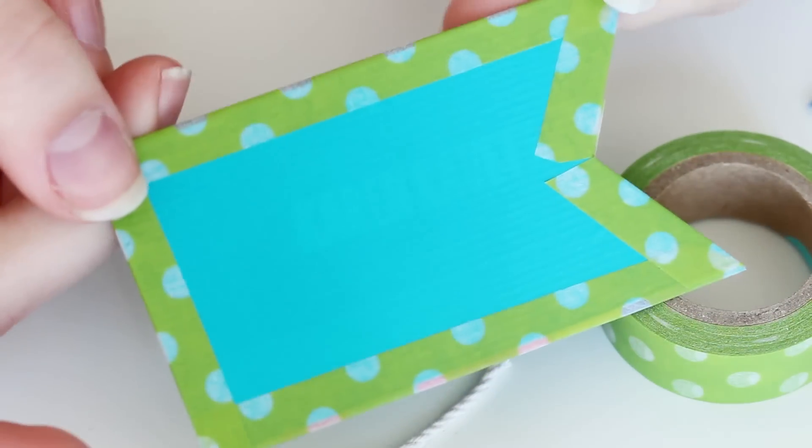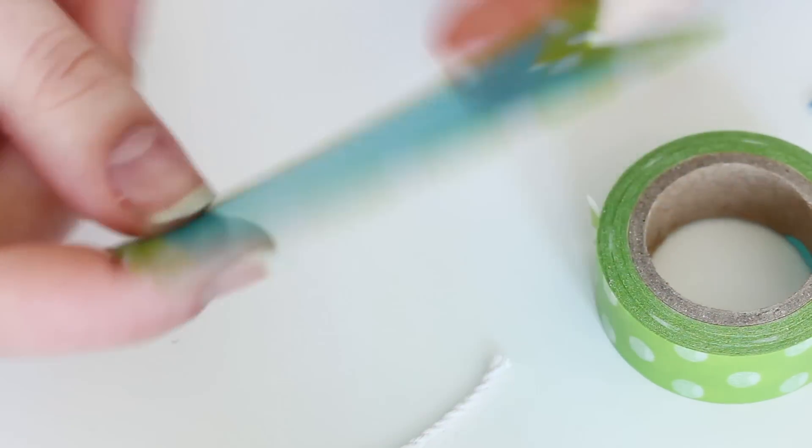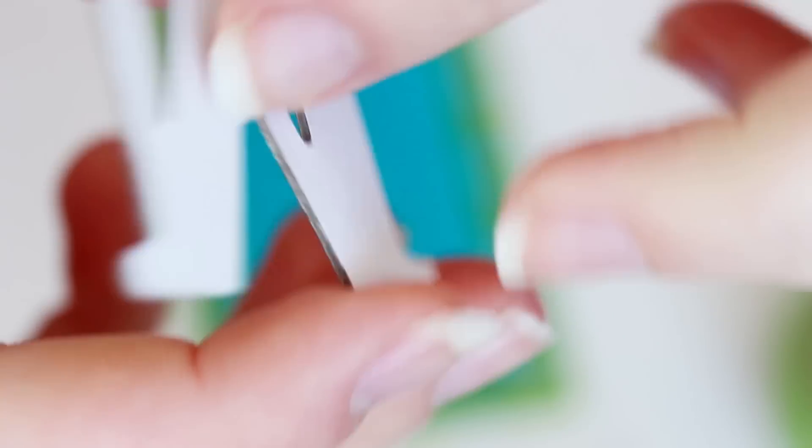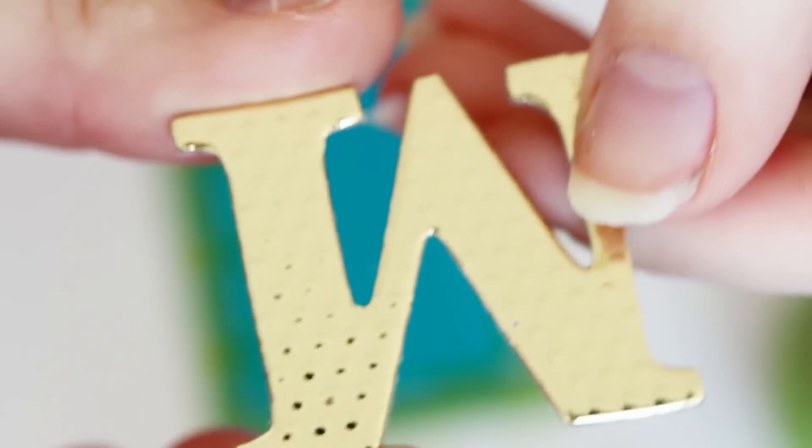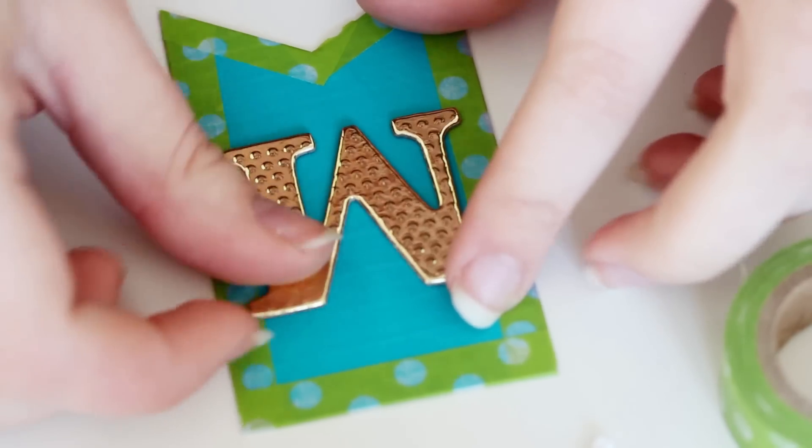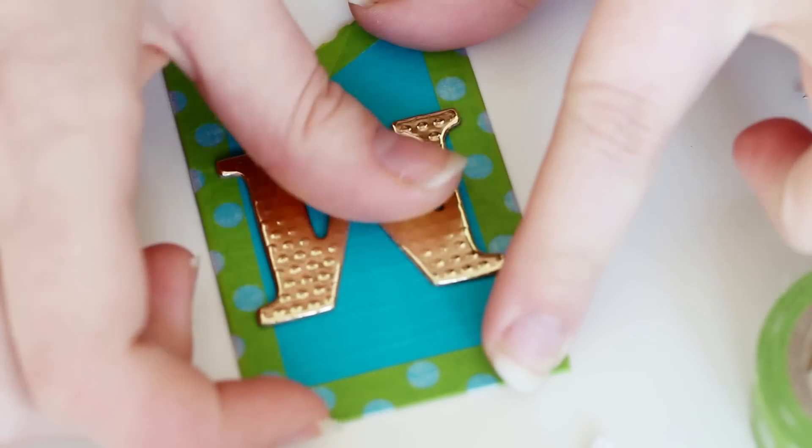So once all of the edges are covered with washi tape, it is time to add the letters. You could paint them or draw them or do whatever you'd like, but I'm going to use these gold letter stickers on mine. Just unpeel the backing and stick it on, and repeat this until every piece of your banner is finished.